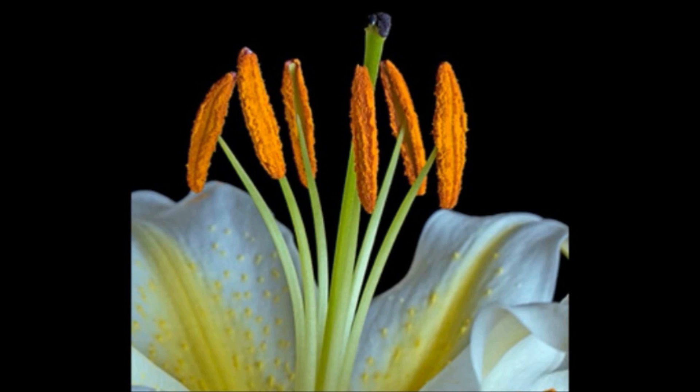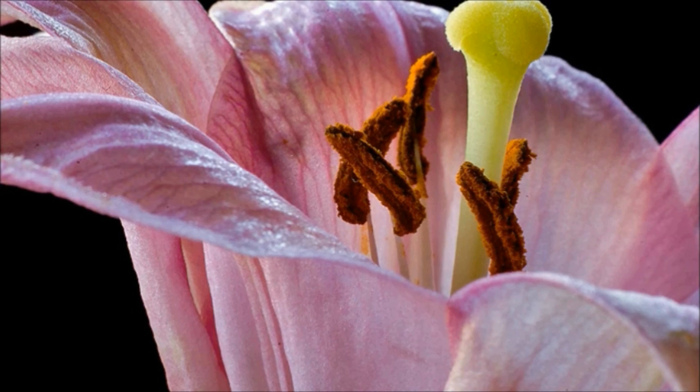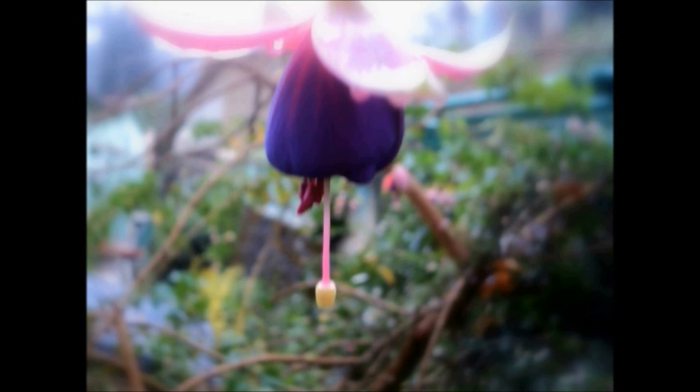Two types of reproductive structures are present: stamen and pistil. First, the male reproductive part, the stamen, consists of two parts: anthers and filament. Inside the anthers are pollen sacs. The center structure of the flower is the pistil, the female reproductive organ. Normally, the pistil contains three parts: stigma, style, and ovary.